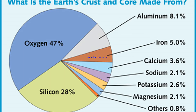Have you ever wondered how all the different types of atoms are made? Well, they're made in stars. Even the atoms that you're made of come from the inside of stars. But how are they made, and how do they end up on our planet and other planets alike?